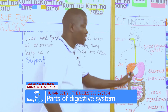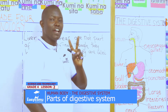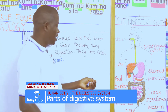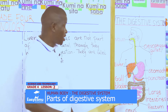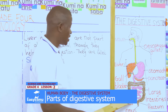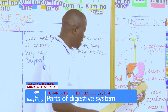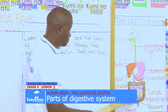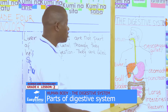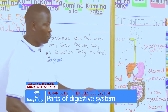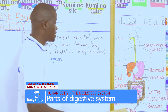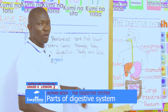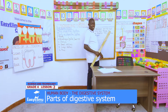These large intestines are also divided into two. We have the colon and we have the rectum. The colon is the main part of the large intestine. The rectum stores food for some few hours as it waits to be taken away from our body through the anus.